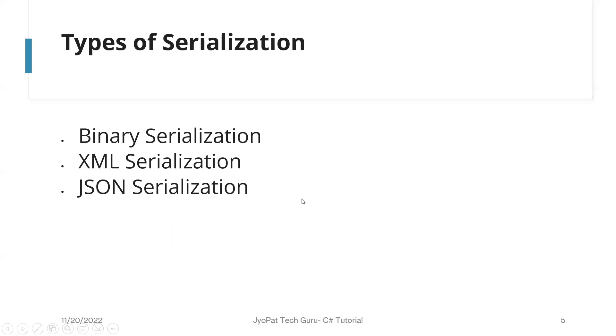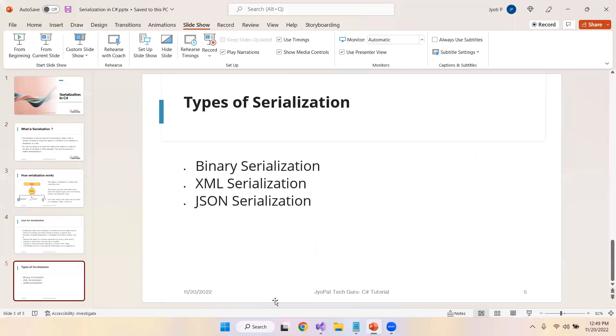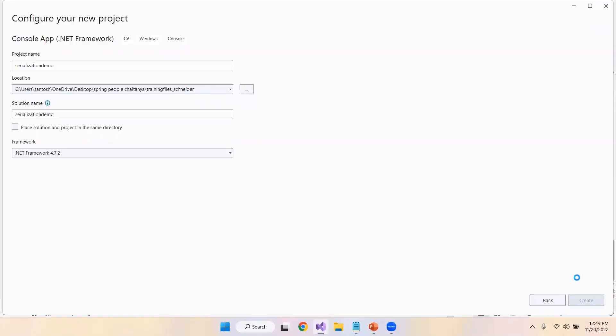There are different types of serialization: binary serialization, XML serialization, and JSON serialization. Let us see the illustration for these in Visual Studio — let me create a simple console application.